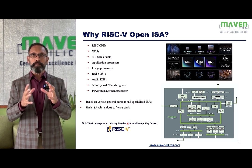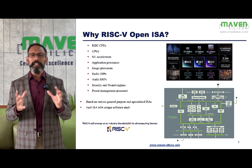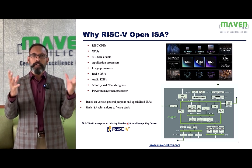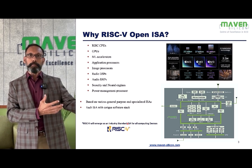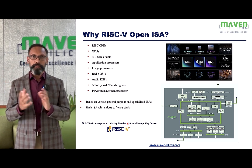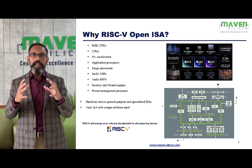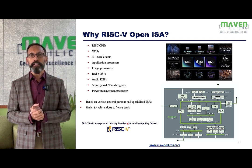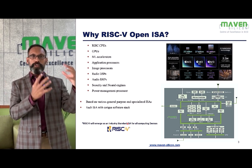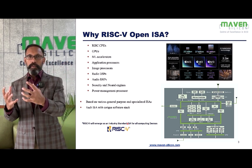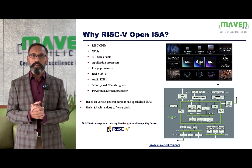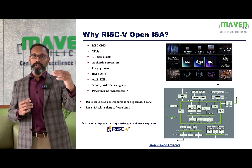That's where RISC-V offers an OpenISA — meaning license-free. You can create your own IPs, or there are many IP vendors available as part of the RISC-V ecosystem. You can buy pre-verified IPs and implement your embedded systems controllers or SOCs as you prefer. RISC-V is going to emerge as an industry standard ISA for all computing devices — CPUs, GPUs, accelerators, coprocessors, DSPs, and image processors.